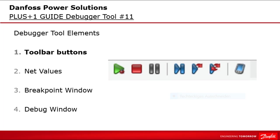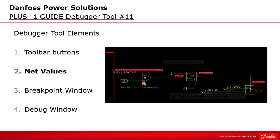After showing an overview of the debugger tool, we will go step by step through the controls and functionalities. The debugger tool provides the following elements. First, the toolbar buttons, which control the debugger tool execution — run, step, stop, step and step over, and step loop. The toolbar also provides a button to start the debug visualizer. Second, the net values, which are displayed only during a debugger tool session and identify the variables in your application and their current values. How net values are displayed can be modified inside the Guide settings.